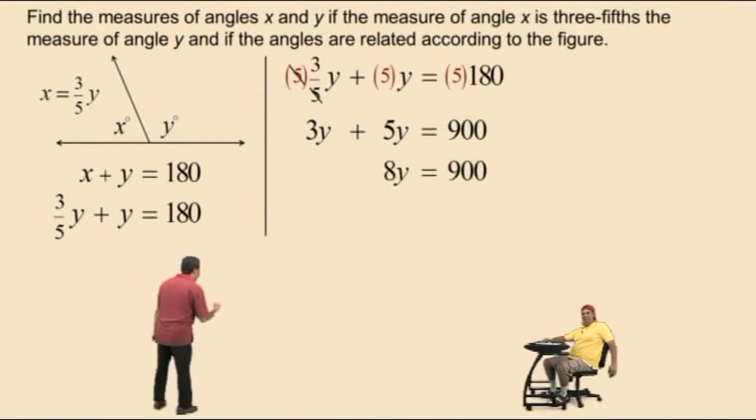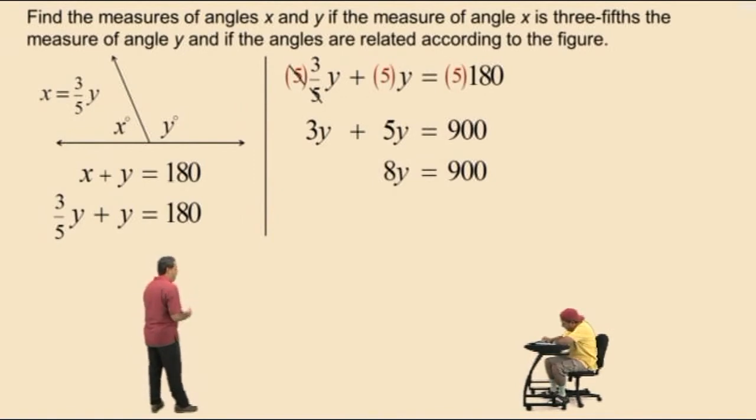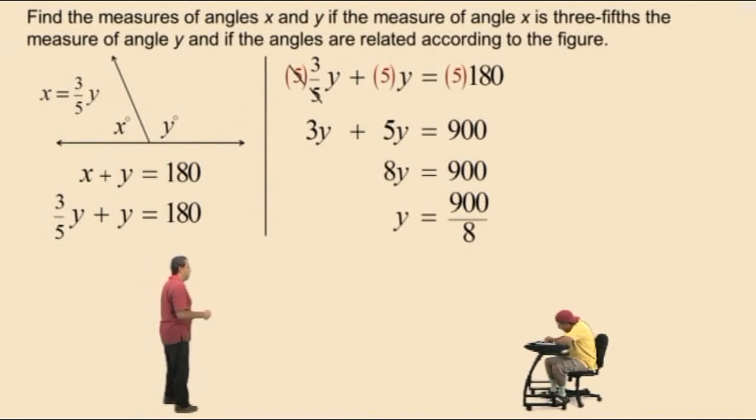Now, to solve for y, we divide both sides of our equation by 8. And we get y equals 900 divided by 8. Now, Charlie, what's 900 divided by 8? 112.5. Very nice.